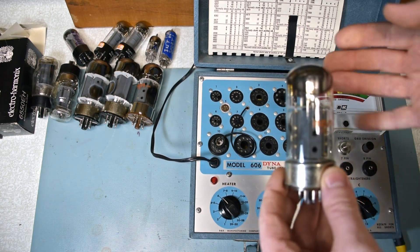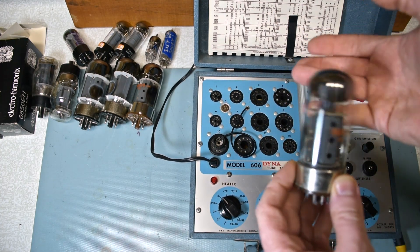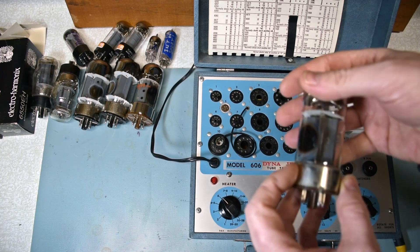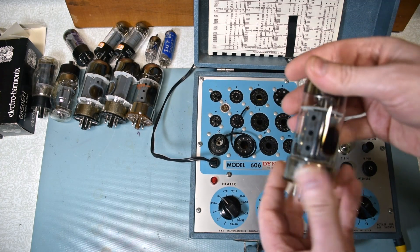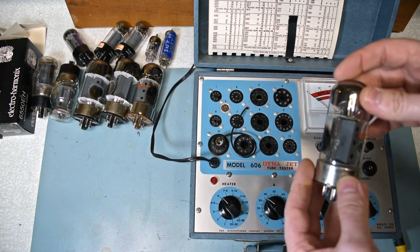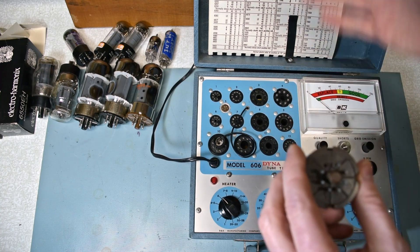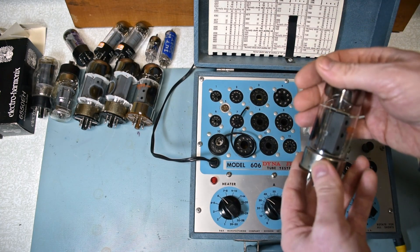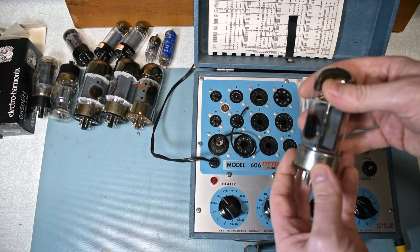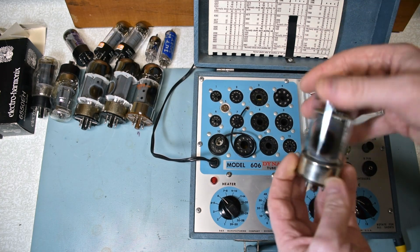Another thing I do is I tap it with my finger, listen for rattling. If it's a combo amp or the tubes are right next to the speaker, the vibration of the speaker will vibrate the tube and sometimes you can hear that rattling sound.